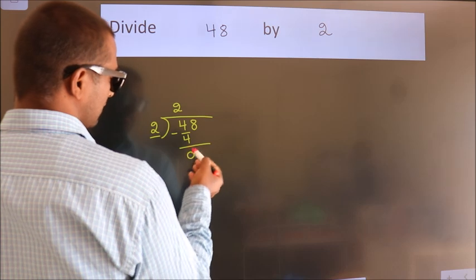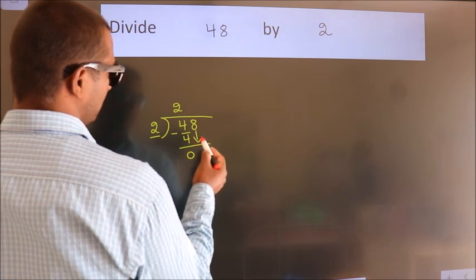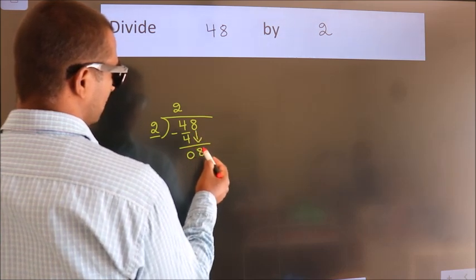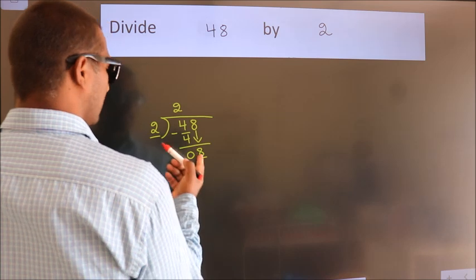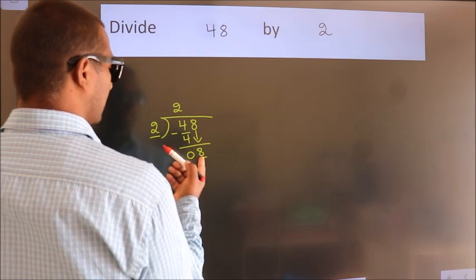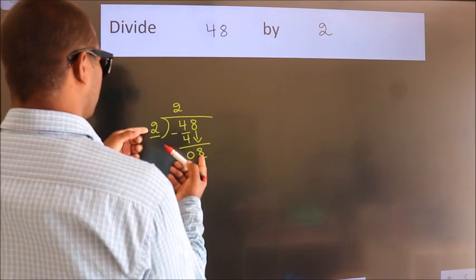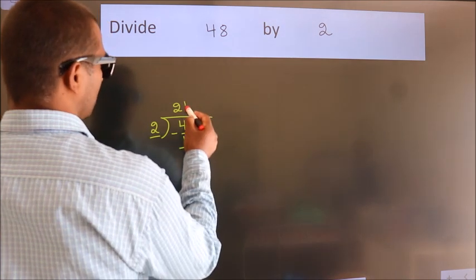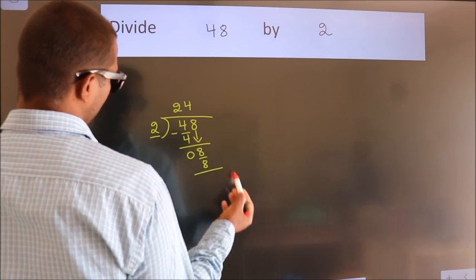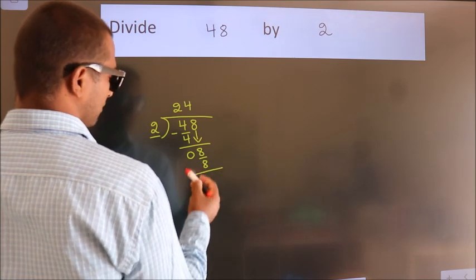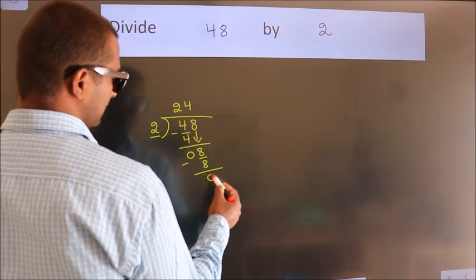After this, bring down the beside number. So, 8 comes down. When do we get 8 in the 2 times table? 2 fours are 8. Now we subtract. We get 0.